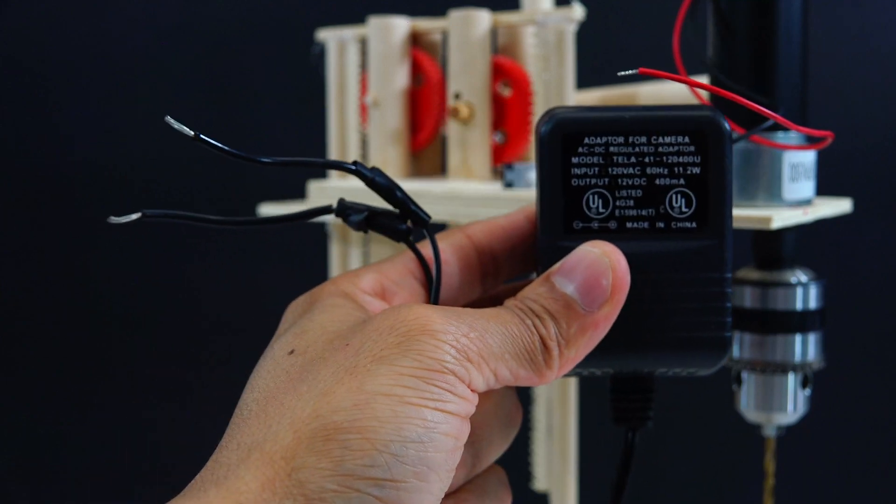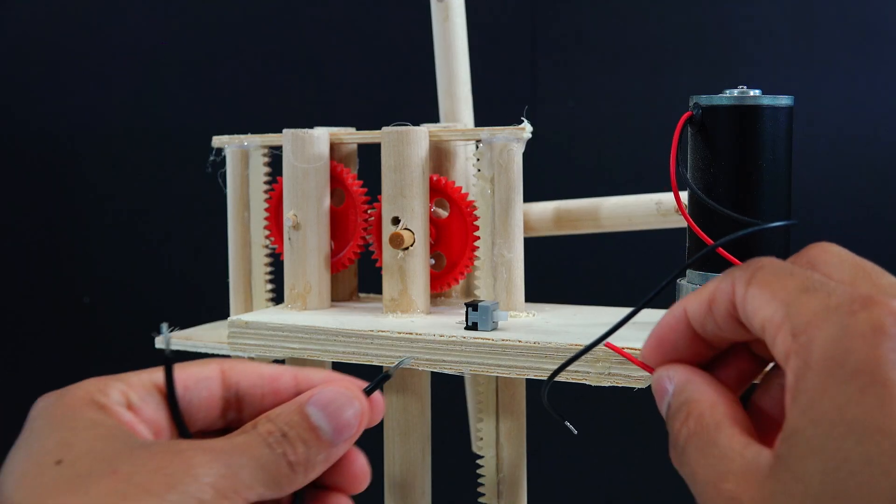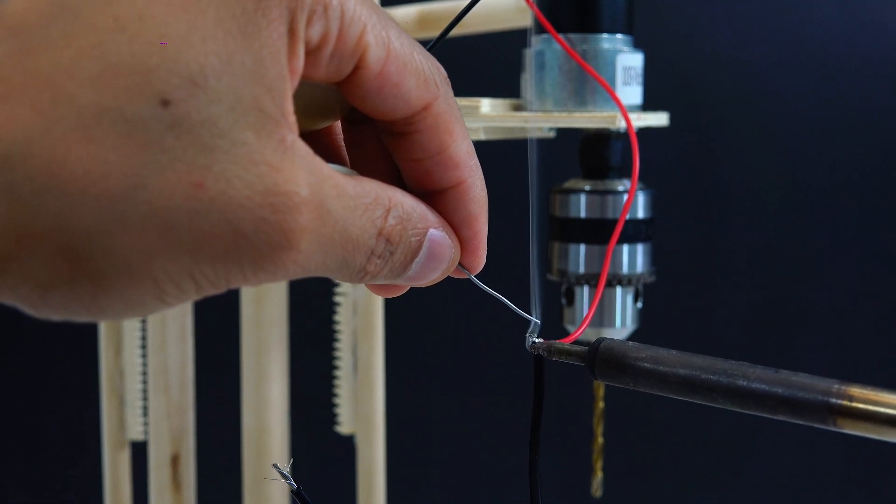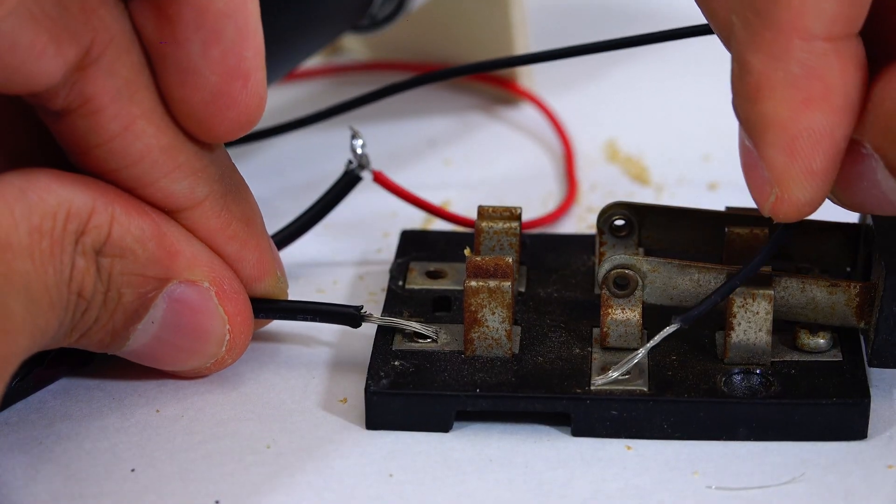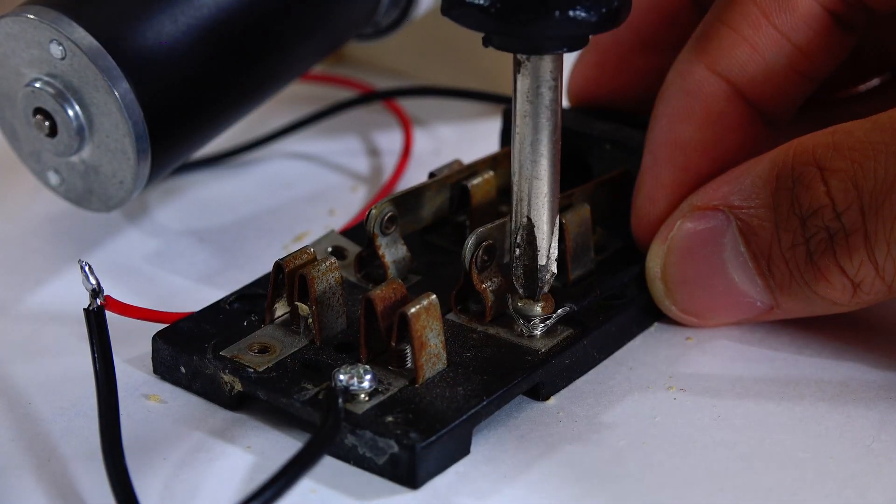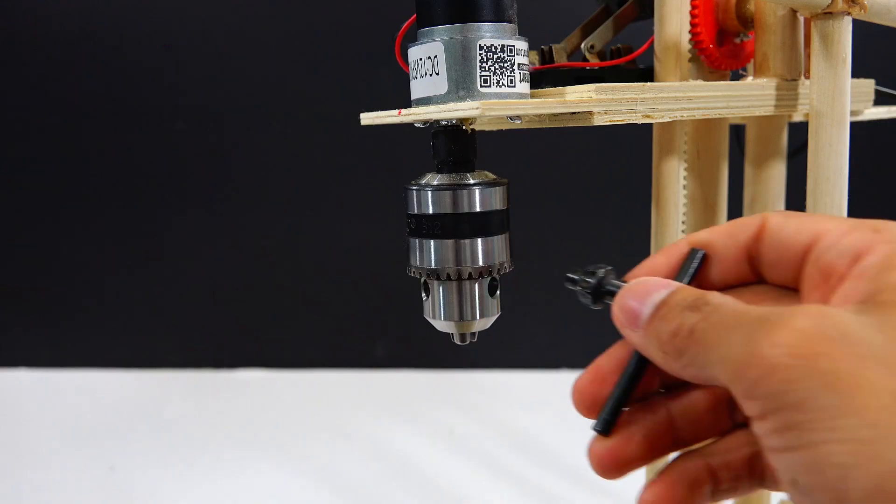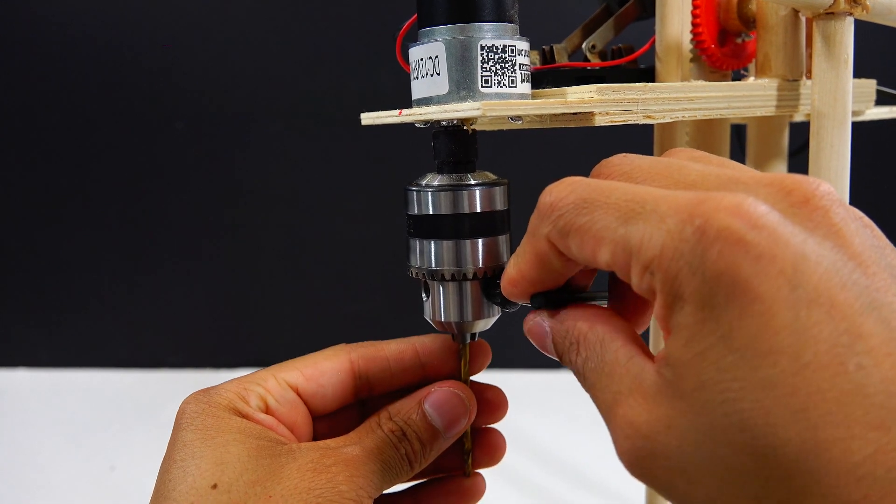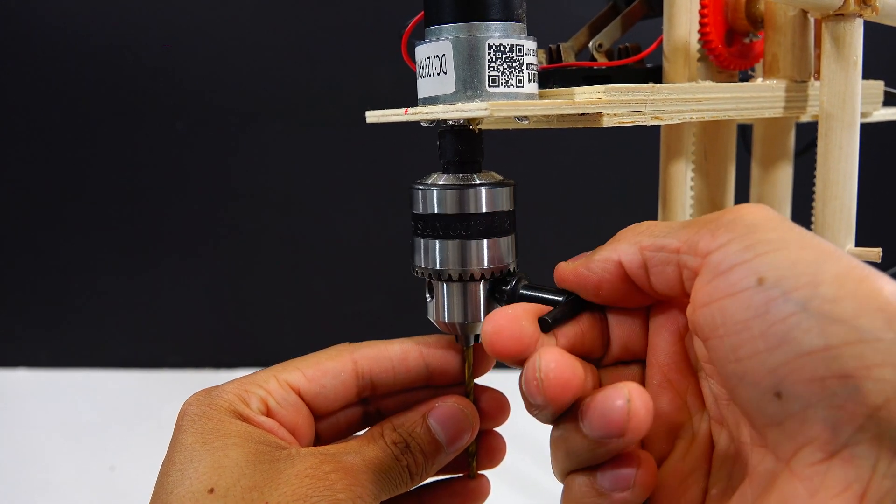So to power our drill I found a DC power adapter that converts AC to DC. I'm going to solder one of the sides of the power adapter to the motor. And then the other side I'm going to separate with a switch. Once the DC power adapter and the switch are both set up, we can finally put a tool in the drill and try drilling something.